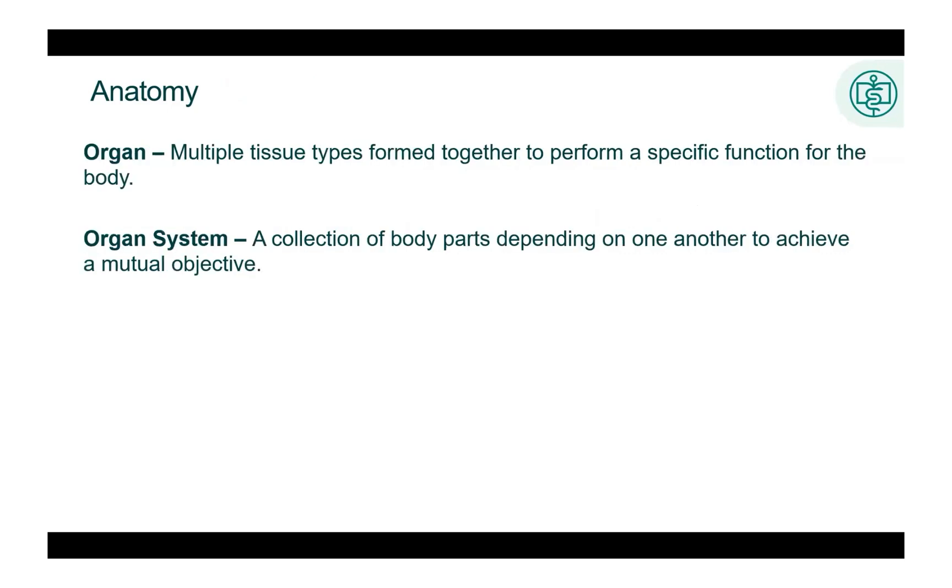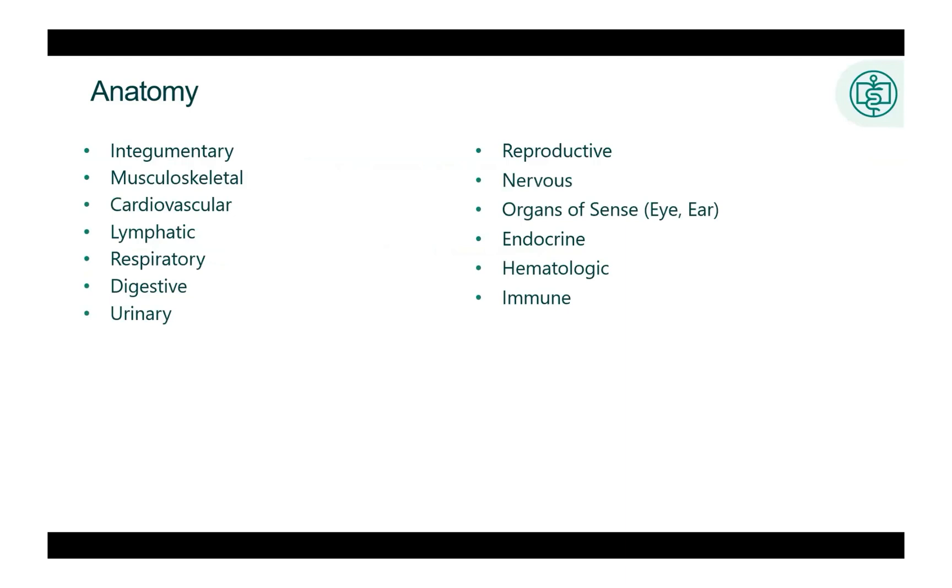The human body contains multiple organ systems. An organ is multiple tissue types formed together to perform a specific function for the body. An example of an organ would be the heart. An organ system is a collection of body parts that depend on one another to achieve a mutual objective. An example of an organ system is the cardiovascular system, where the heart and the blood vessels work together to carry blood and oxygen to all body cells. The organ systems make up the human body. In this chapter, we will discuss a brief overview of the organ systems. Each organ system is also discussed in subsequent chapters as it pertains to the chapter itself.